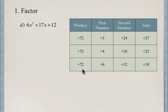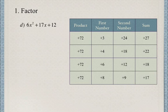7 is not a factor of 72, so we move to 8. 8 times 9 equals 72, and 8 + 9 = 17. So our two numbers are 8 and 9.